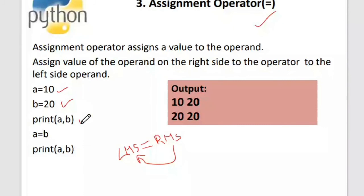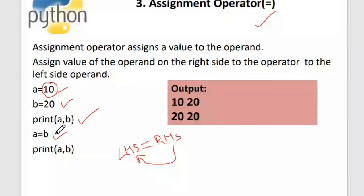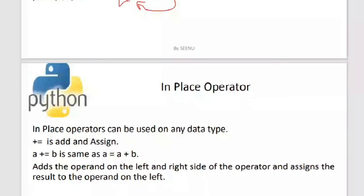I've set a equal to 10 and b equal to 20. The key point is that not only can you assign a literal to a variable — you can also assign a variable to a variable. When I say a = b, the value 20 goes into a. So when I print a and b again, the value of a has changed to 20 because I used that assignment statement before the print.